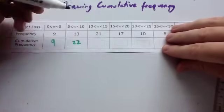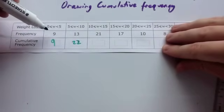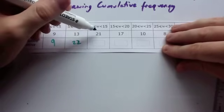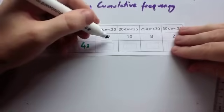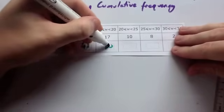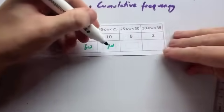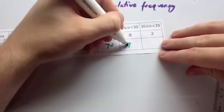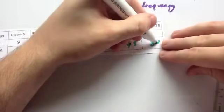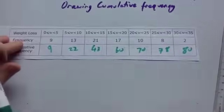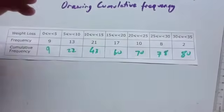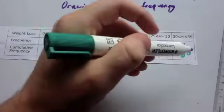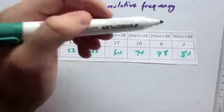Up until the end of this category, so from 0 to 15, you'd do 9 plus 13, which is 22, plus 21, which is 43. And you just keep on adding. So then that would be 60, that would be 70, that would be 78, and then that would be 80. Checking the question that the number of people is the end cumulative frequency. So if there's 80 people doing this weight loss program, then 80 should be the last cumulative frequency.